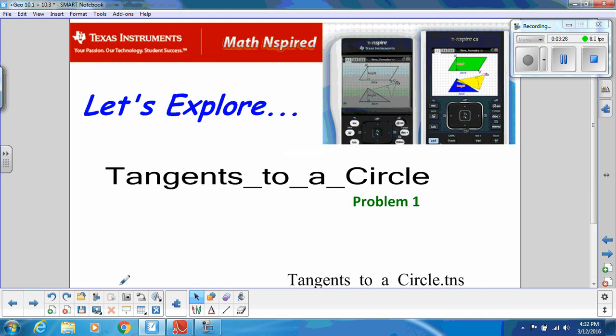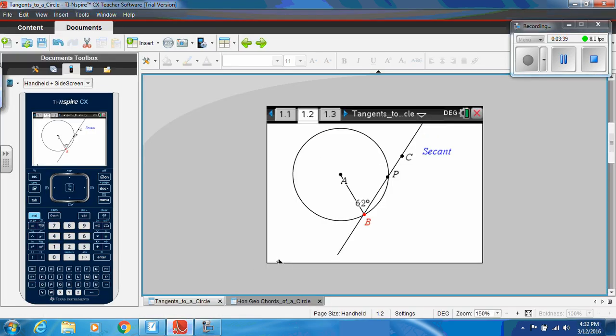And what we're going to do is I'm going to go to the Inspire CX, and I'm going to use the software on my computer. And I'm going to show you just, we're going to discover some things about tangents in a circle. So, if we look at this, here is a secant line, and we know it's a secant line because it has these two intersection points, B and P. And no matter where I put this, see, I'm going to move this all around, and no matter where I move that line, it's still a secant line. The only time it becomes a tangent is when B and P are on the same exact thing.